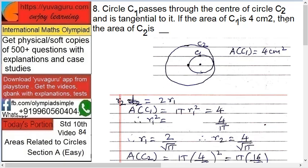If circle C1 passes through the center of circle C2 and is tangential to it, and the area of C1 is 4 cm squared, then the area of C2 is...